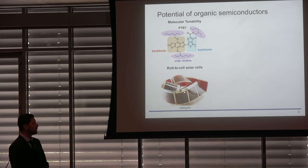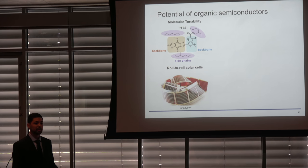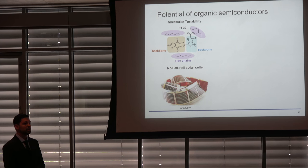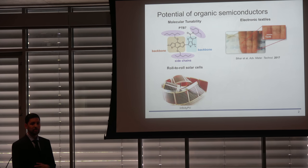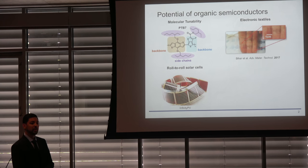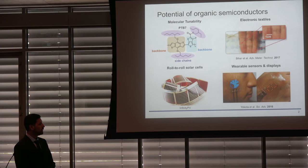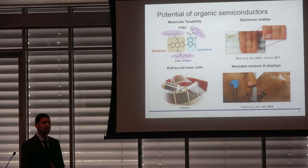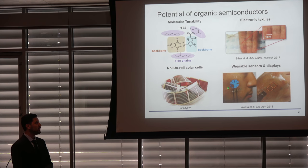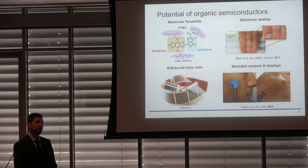Mechanical flexibility enables roll-to-roll processing, a large-area and low-cost fabrication technique we can use to print solar cells by the yard. We can also render these materials more durable and compatible with different fabrics to create smart textiles and electronic textiles. Additionally, we can make these materials stretchable and biocompatible so they can be laminated onto the skin and used as wearable sensors and displays for long-term healthcare monitoring.